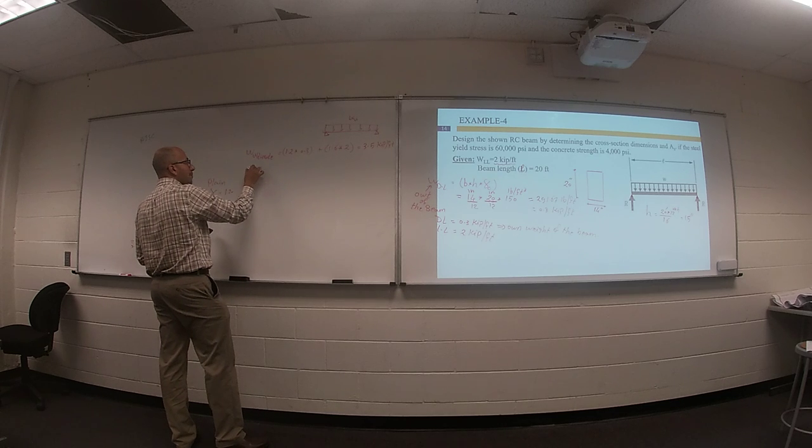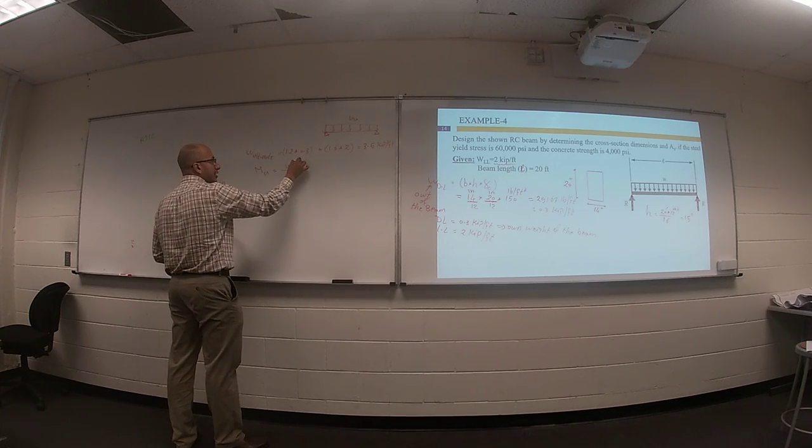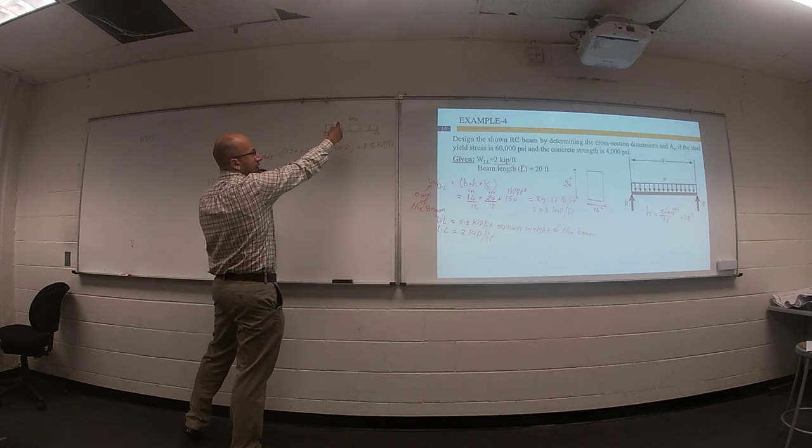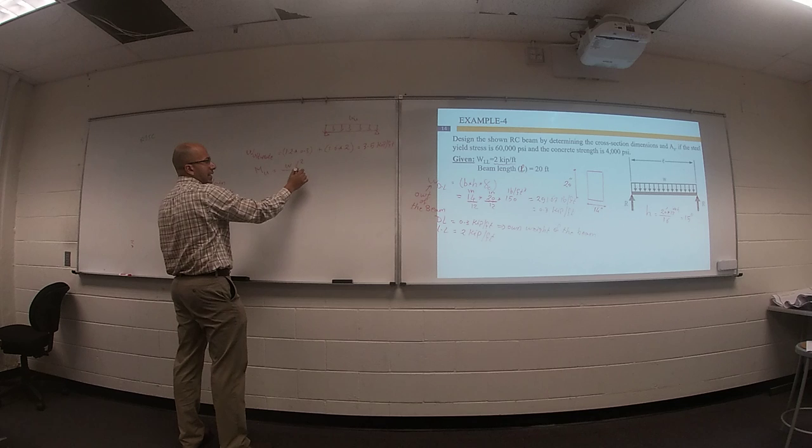So your M ultimate equals W times L squared divided by 8. Do you remember? If you have a simply supported beam with distributed load, your moment will be WL² over 8.